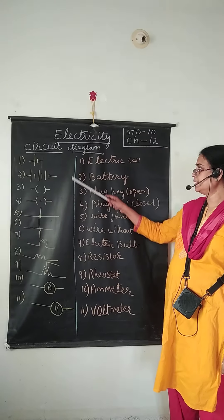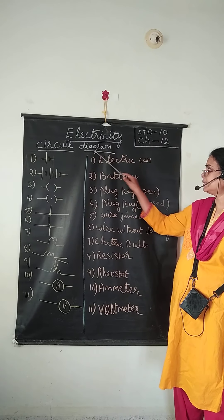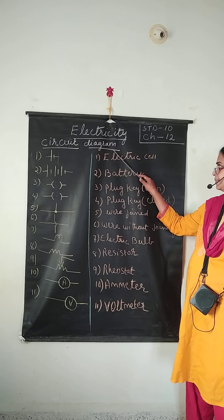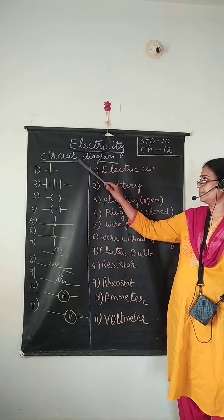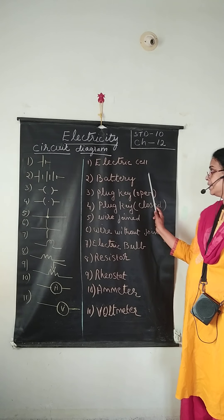Here you can see a circuit diagram. This circuit diagram is used in the electric conductor. These are the symbols and components which are used.